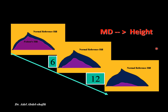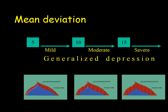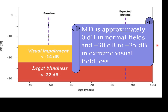When the mean deviation is between 6 and 12, we say there is moderate depression of the field. Below 6 is mild depression, and above 12 is severe depression. Normally the mean deviation is around minus 30 or minus 35 at maximum. As field damage occurs, it progresses from minus 1, minus 2, up to minus 30 or minus 35. Up to minus 14 is compatible with normal life, but starting from minus 14 there will be visual impairment. Below minus 22 is legal blindness.